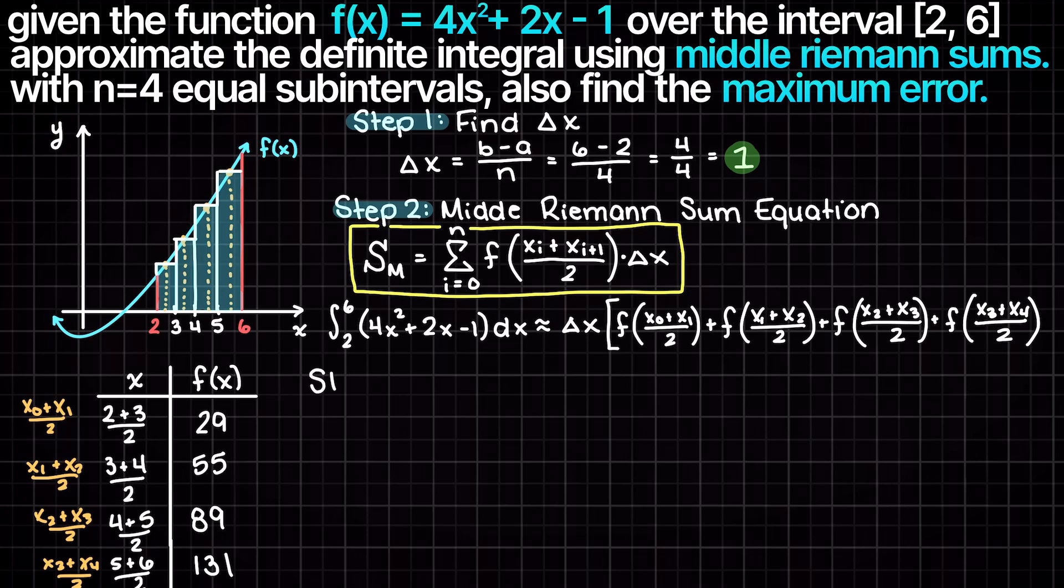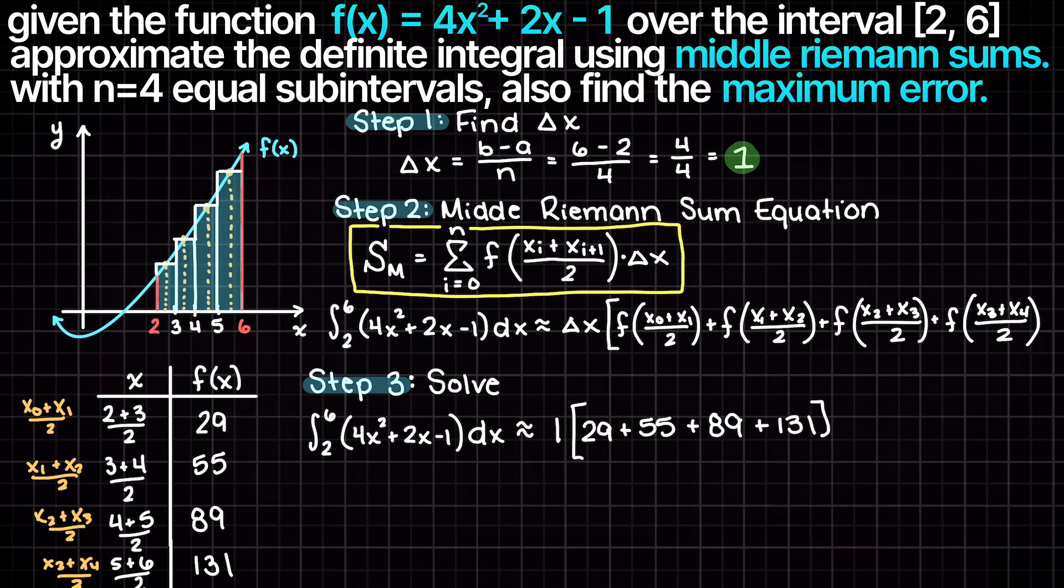Lastly, we have all the required variables and can now solve for the areas by plugging them into our recently found equation. Therefore, this definite integral is approximately equal to 304, and this is our final answer.